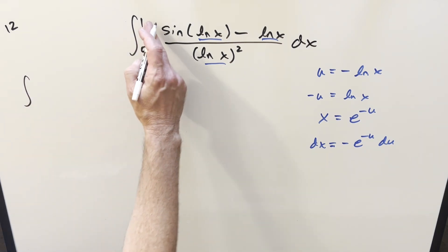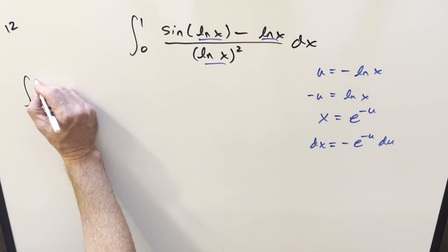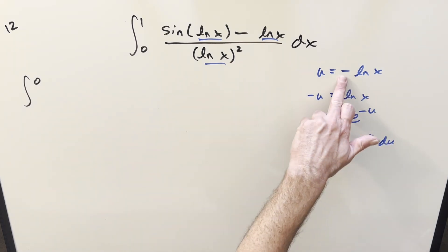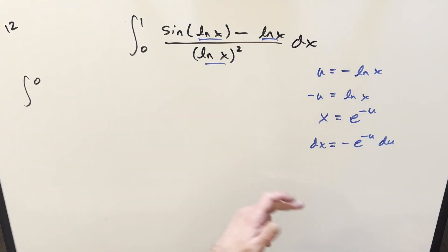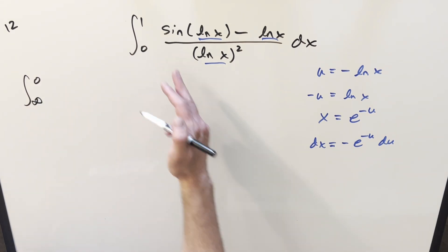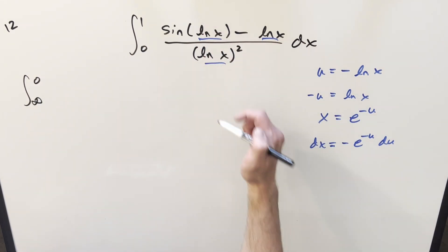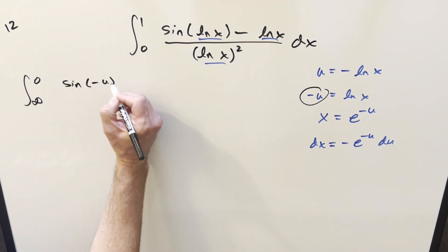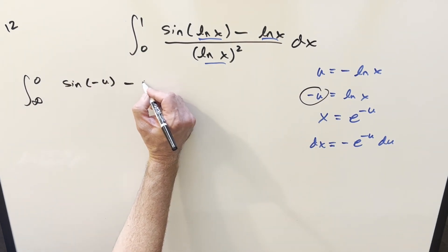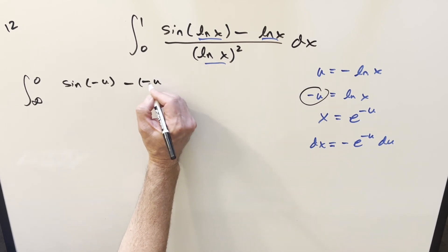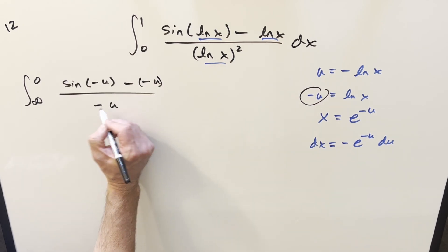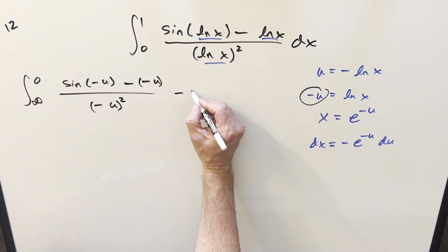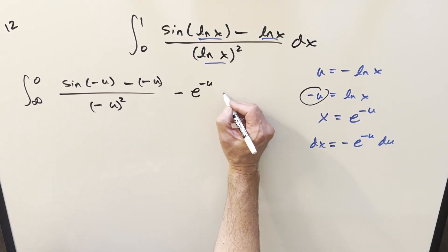Now let's substitute. Plugging in x = 1, natural log of 1 is 0. Plugging in x = 0, natural log at 0 goes to minus infinity, but the minus sign in front fixes it — now we're going to positive infinity. For all these natural log x's, we're now using -u. So we write sine(-u) minus (-u) over (-u) squared, times -e^(-u) du.